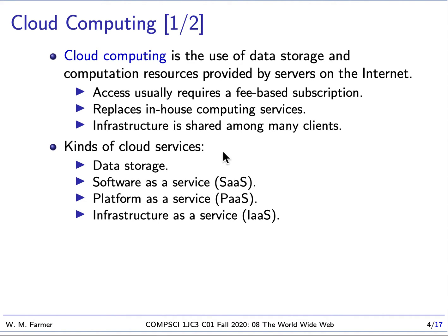Cloud computing provides various kinds of services. You can store data, or you can have access to particular software — this is called Software as a Service. You can have access to a virtual computer, which is Platform as a Service. Or you can have access to the ability to create virtual computers as you need them — this is called Infrastructure as a Service.